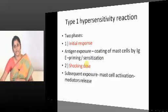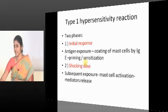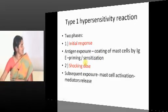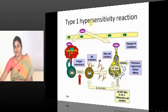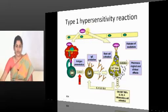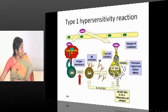The shocking dose is the subsequent exposure that results in mast cell release of cytokines and clinical symptoms. What should be the quality of the antigen? Polyvalent. Why is this quality important?